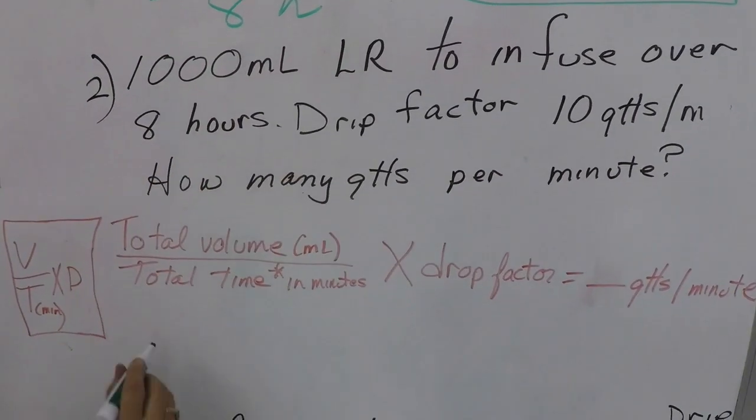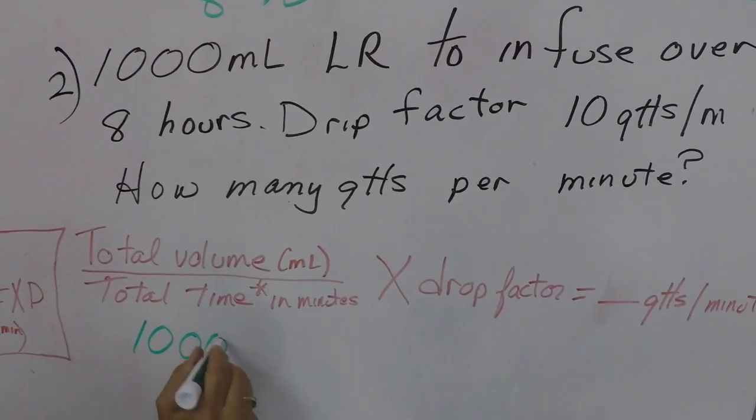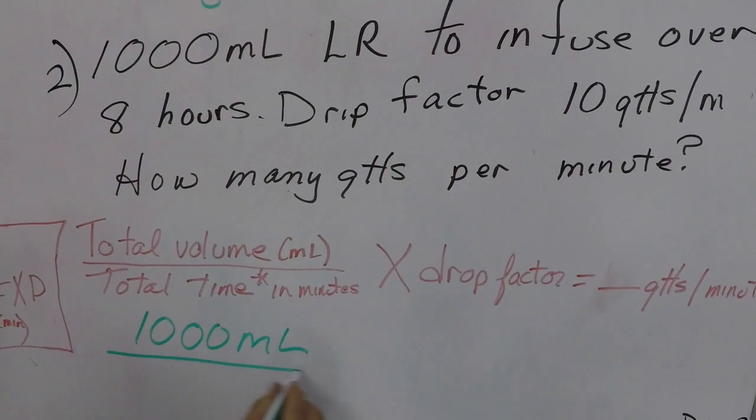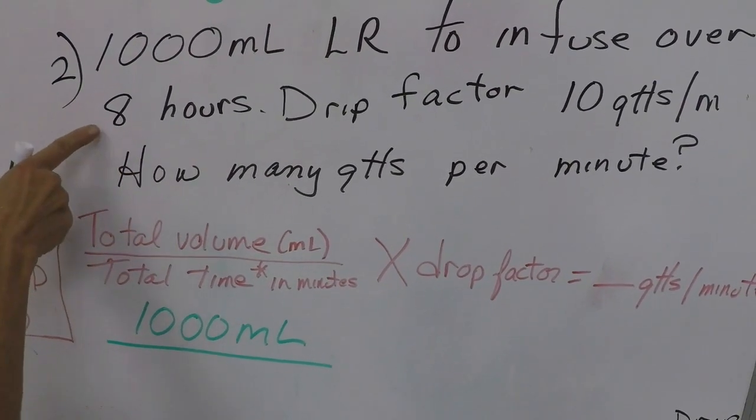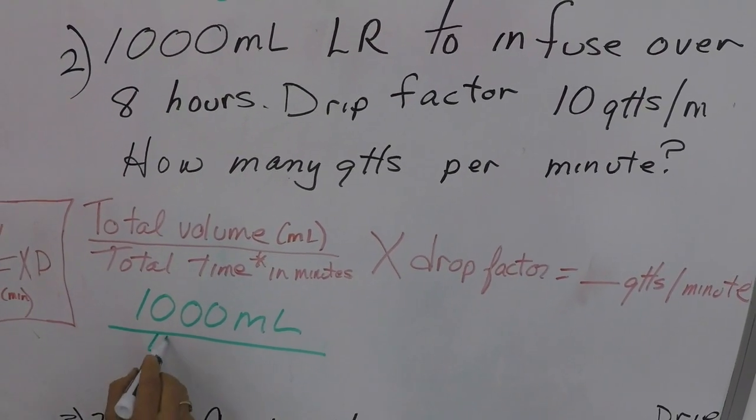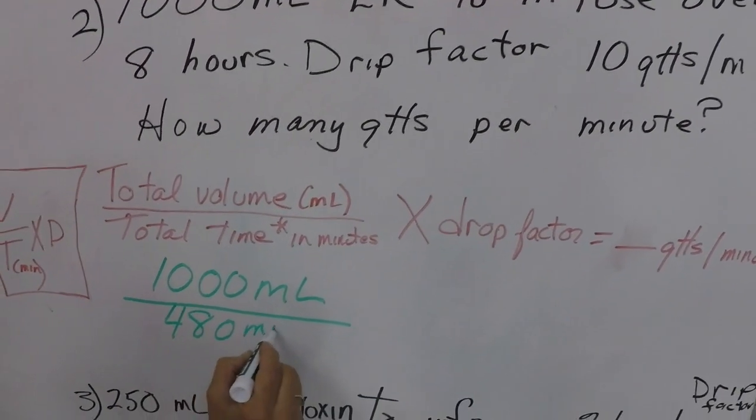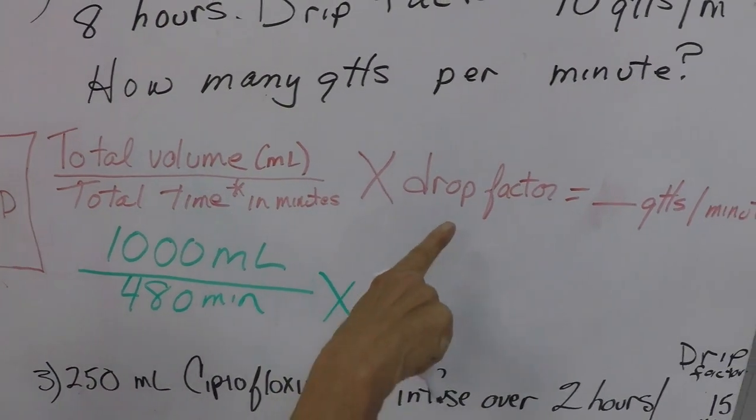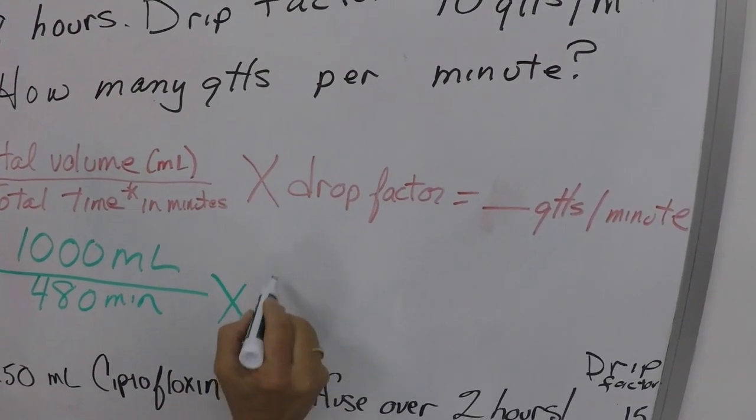So a thousand ml divided by total time in minutes. So that would be eight times sixty, right? So that would be 480 minutes times our drip factor and that was 10.